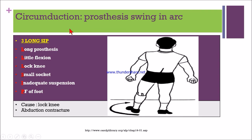Circumduction occurs when the prosthesis swings in an arc. If the knee is locked or there is an abductor contracture, the leg will circumduct to clear the ground.